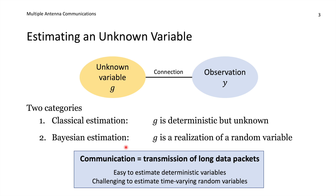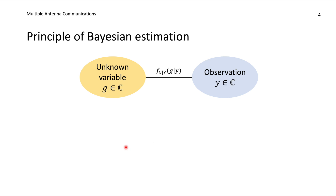That does not mean that classical estimation is unnecessary — on the contrary, we need to utilize all kinds of estimation theory to learn all the parameters we need. It just means that deterministic variables can be estimated essentially without error because they are fixed forever. So what we are considering is Bayesian estimation.